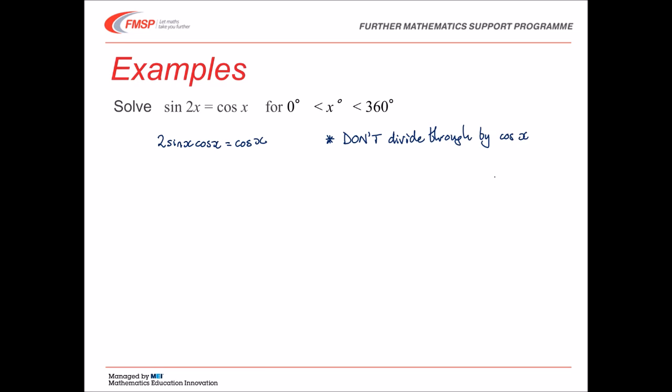That's because cos x might be 0, and dividing by cos x will mean you lose a solution. You lose the solution where cos x equals 0. You won't get an impossible situation, as you sometimes get when dividing by 0, but you will lose a solution, and that will lose you marks in the exam. So instead of dividing by cos x, we'll subtract cos x from both sides and set that equal to 0.